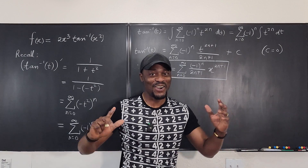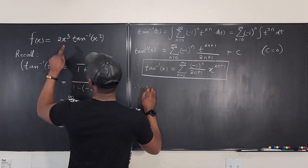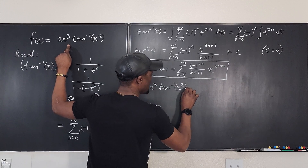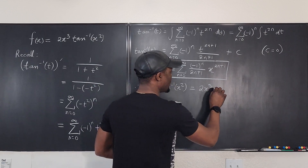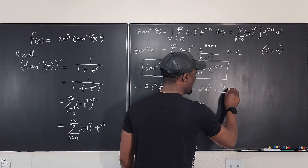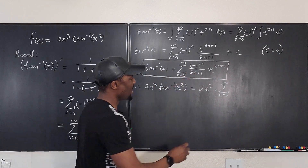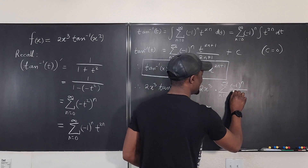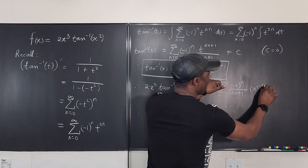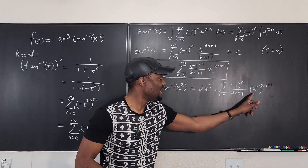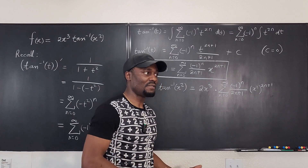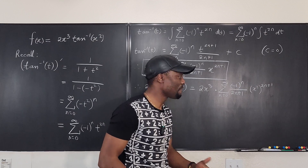Just replace x with x² — that's the beauty of polynomials. So arctan(x²) = sum from n=0 to ∞ of (−1)ⁿ/(2n+1) · (x²)^(2n+1). So our function 2x³·arctan(x²) becomes 2x³ multiplied by that sum: 2x³ times the sum from n=0 to ∞ of (−1)ⁿ/(2n+1) · (x²)^(2n+1). It's just like composition of functions — you replace x with x².